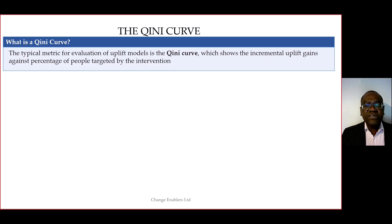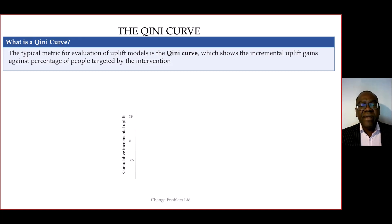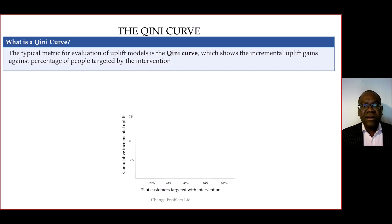The Qini curve shows the incremental uplift gain against the percentage of people targeted by an intervention. On the vertical axis, we have the incremental uplift gain — think of this as the cumulative increase in uplift as a result of our intervention. On the horizontal axis, we have the percentage of the population who have been treated.